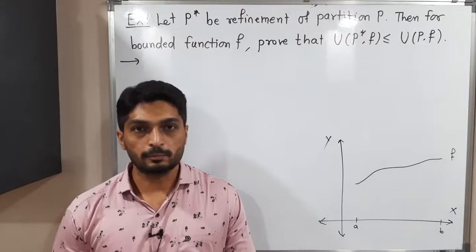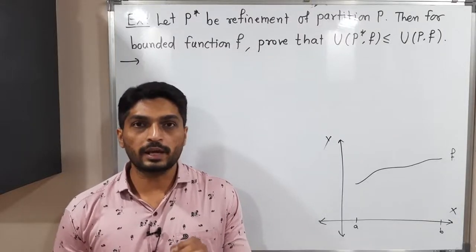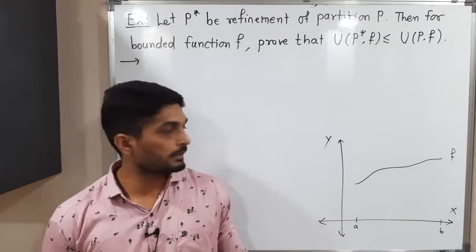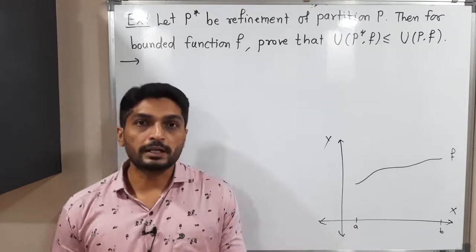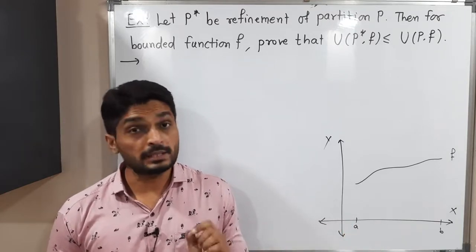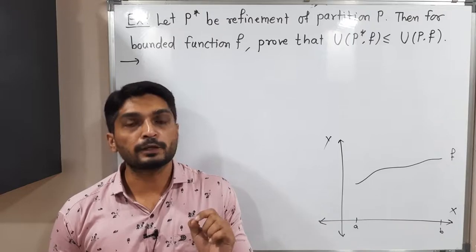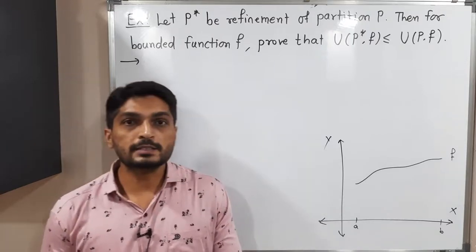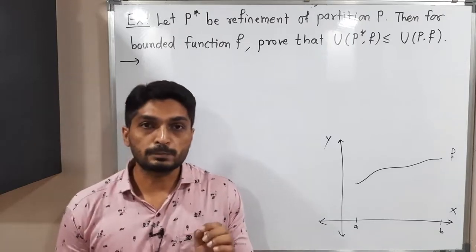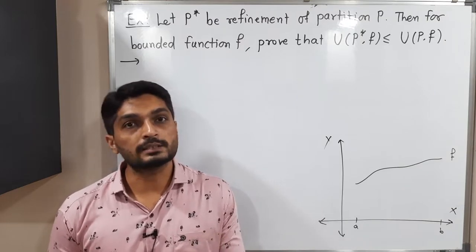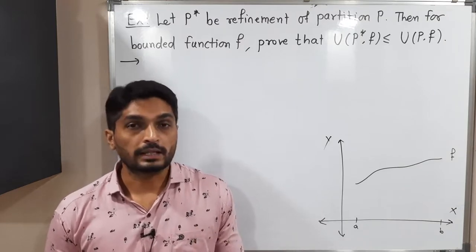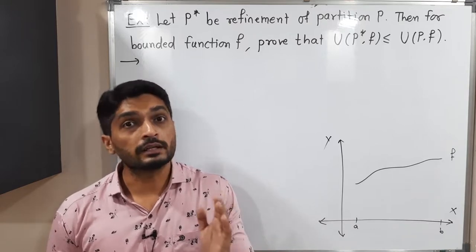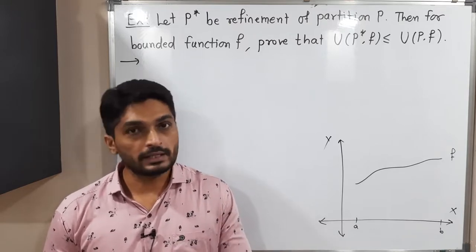Let us discuss this result. We have a function F defined on closed interval [a, b]. It has two partitions P and P*, where P* is a refinement of partition P. We have to prove the inequality: upper sum with partition P* is less than or equal to upper sum with partition P. That means if you take the refinement, the upper sum will reduce.